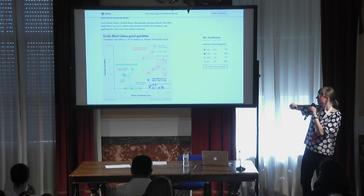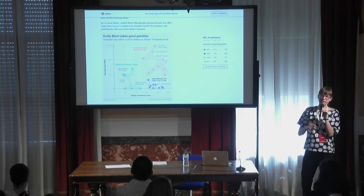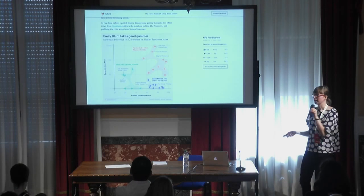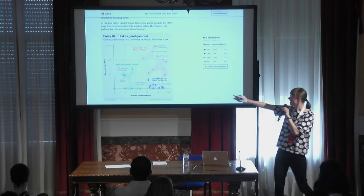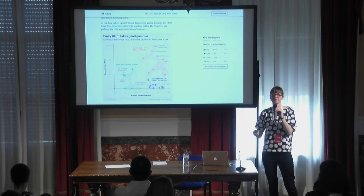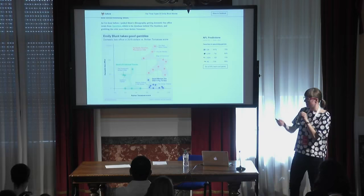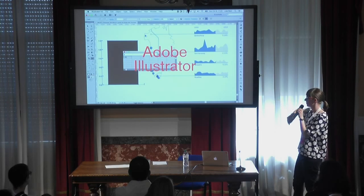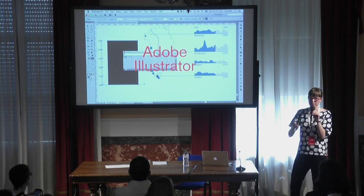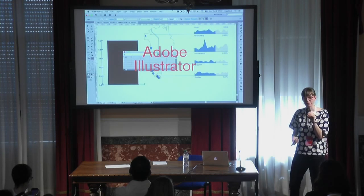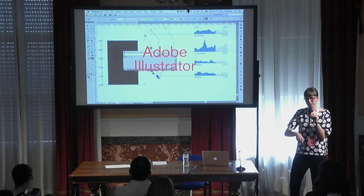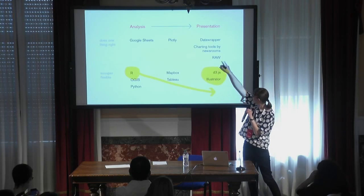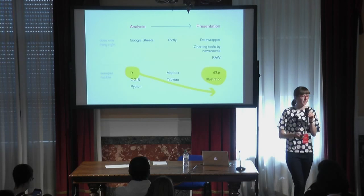People actually do use R's output in news articles. 538, for example, built their own library to export graphics in their house design style. They also put the output into Adobe Illustrator to clean it up and add annotations. That's possible in R but super hard — R is really more for analysis. But 538 puts it into a presentation workflow, which makes a lot of sense given how data-driven they are.